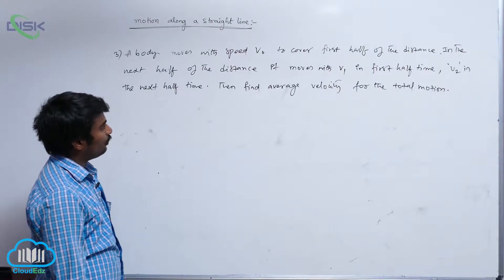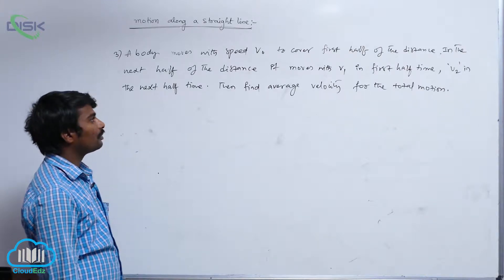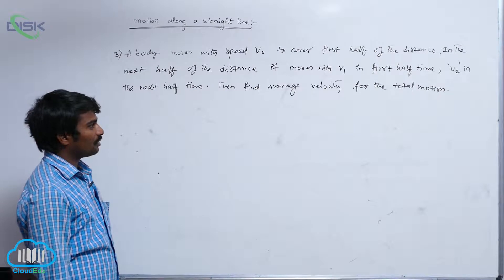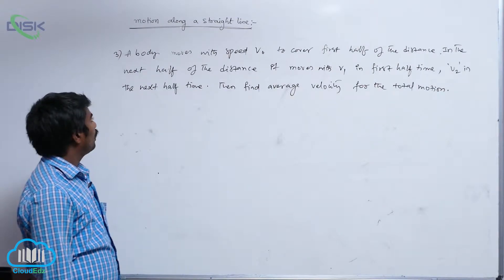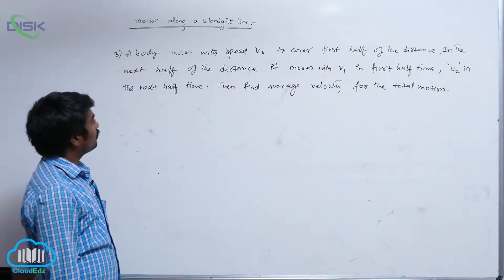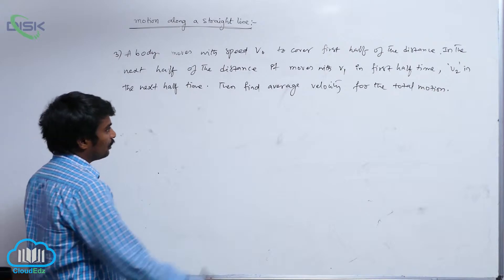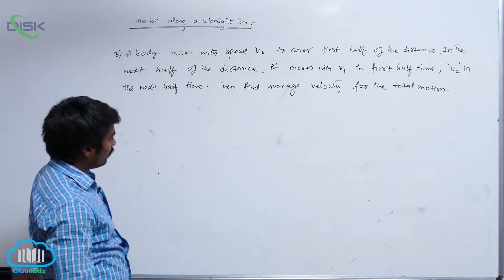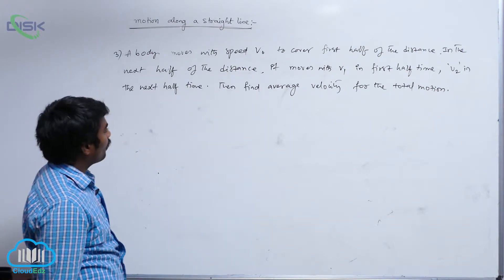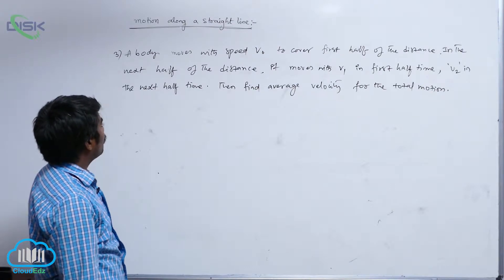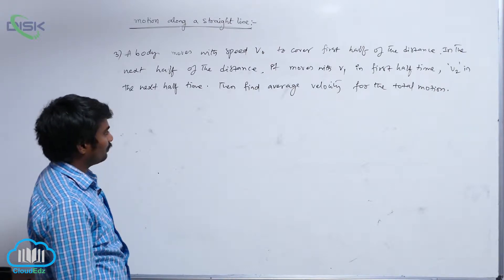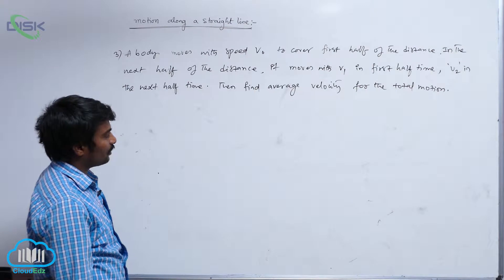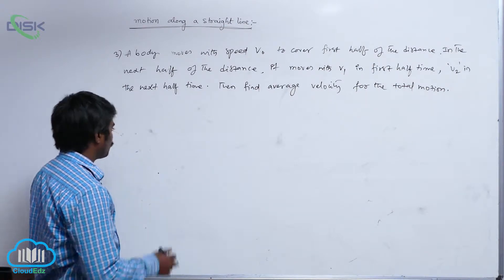A body moves with speed v0 to cover the first half of the distance. In the next half of the distance, it moves with v1 in the first half time and v2 in the next half time. Find the average velocity for the total motion.